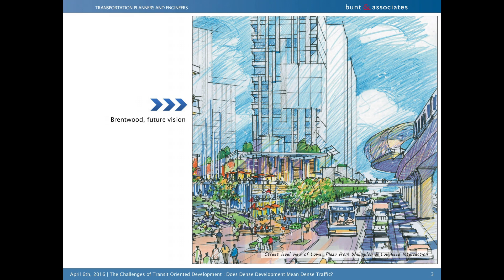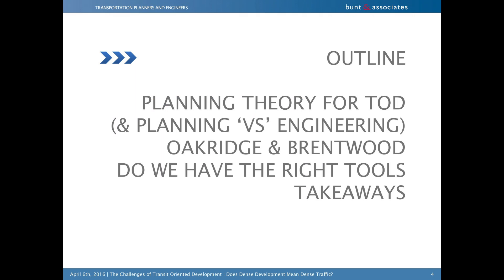These are the denser, urban mixed-use developments. Just to give you a quick idea of what we're going to cover: planning theory for transit-oriented developments, hopefully most people know that already; planning versus engineering; and then a couple of key examples - Oak Ridge and Brentwood - two major projects that Bunt's been privileged to be involved in in the Vancouver region. And then: do we have the right tools?